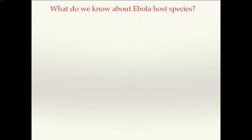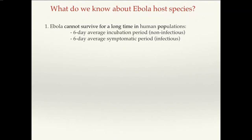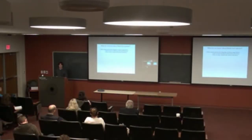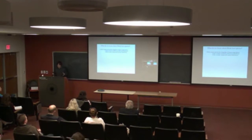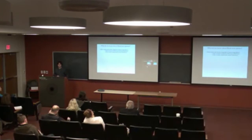In humans, the virus survives for a very short period. The incubation period is about six days on average, and then there is usually about a week of symptomatic infectious period — that's actually pretty short for the virus. The virus doesn't spread very well in human populations because it's actually too virulent and kills its hosts, which is counterproductive. The virus spreads pretty fast, but since it kills its hosts, it eventually disappears.